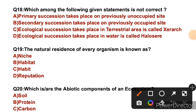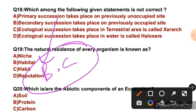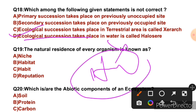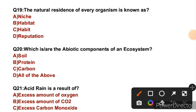Question 18: Which of the following statements is not correct? Statement A: Primary succession takes place on a previously unoccupied site — this is correct. Succession is a process where one biotic community replaces another. Statement B: Secondary succession takes place on a previously occupied site — this is also correct. Statement C: Ecological succession that takes place in terrestrial areas is called halosere — this statement is incorrect. Statement D: Ecological succession which takes place on water is called hydrosere — this is correct. So the right answer is D.